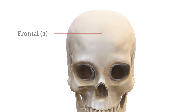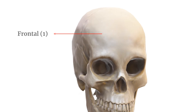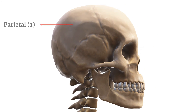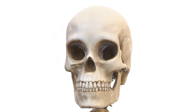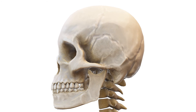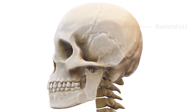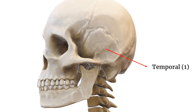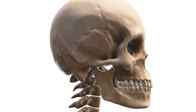Frontal bone: forms your forehead and part of the eye sockets, protecting the brain and supporting the face. Parietal bones: these are on the top and sides of the skull, forming the roof of the cranial cavity. Temporal bones: located near your ears, these bones house structures for hearing and balance.